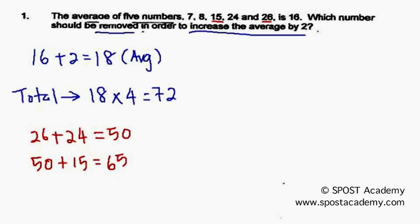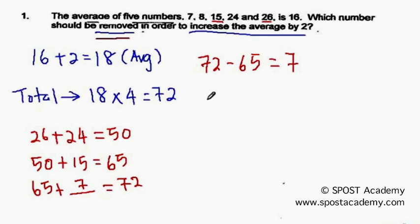So now comes the question. 65 must plus a number to give us 72. So the number is actually, the unknown number must be 7. Because 72 minus 65 would give us 7. Since the question is asking which number should be removed, the number that should be removed is actually 8.